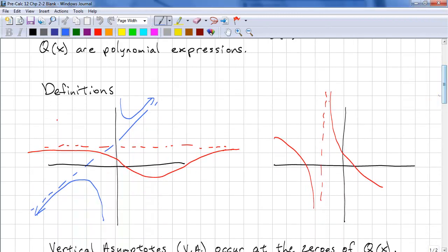Just to help you with definitions, this blue dotted line is called a slant asymptote. This red dotted line is called a horizontal asymptote, and this dotted red line is called a vertical asymptote.